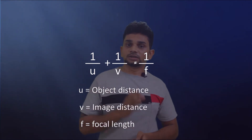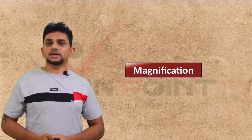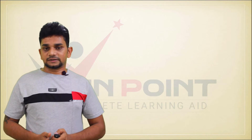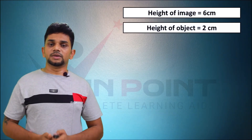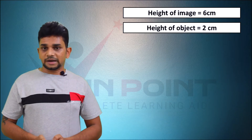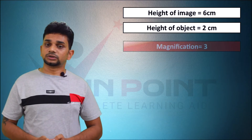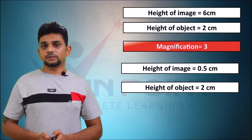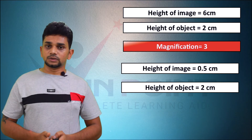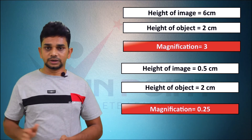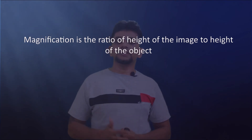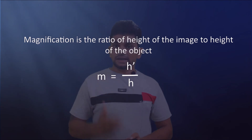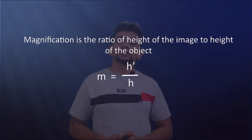Magnification is the ratio of the height of the image to the height of the object. For example: if the height of the image is 6 cm and the height of the object is 2 cm, the magnification is 6/2 = 3. If the height of the image is 0.5 cm and the height of the object is 2 cm, the magnification is 0.5/2 = 0.25. Magnification has no unit. The equation is m = h'/h, where h' is the height of the image and h is the height of the object.